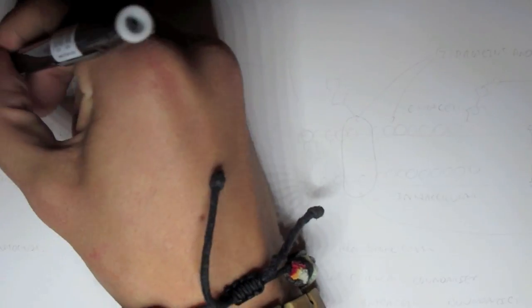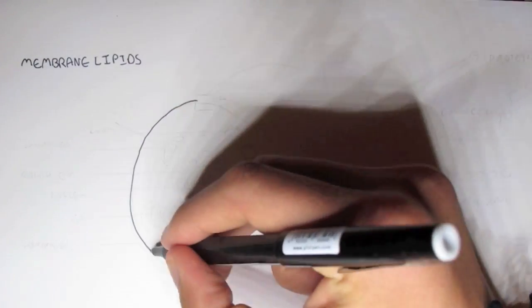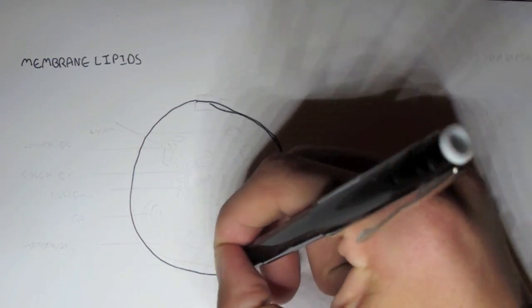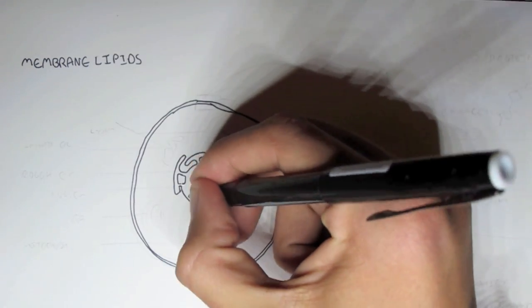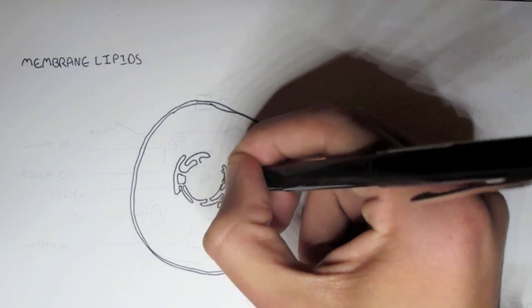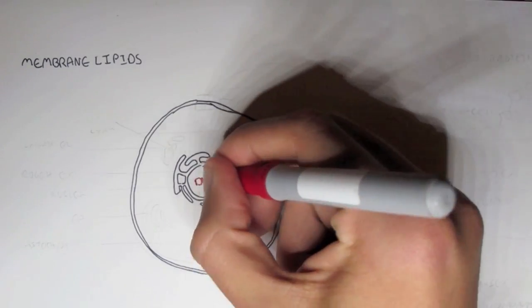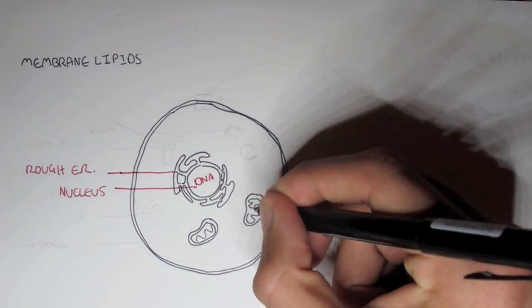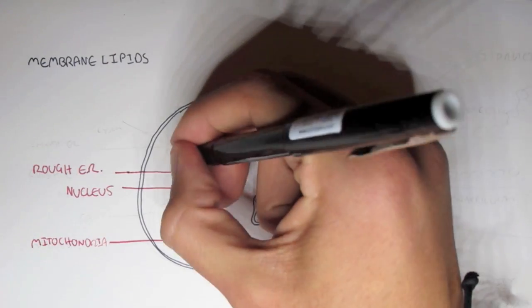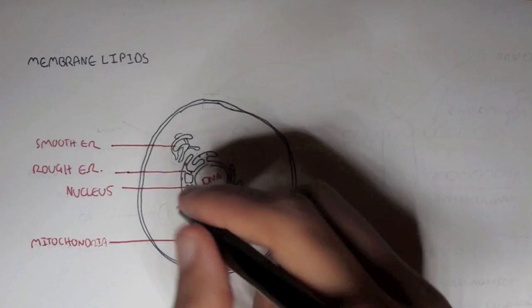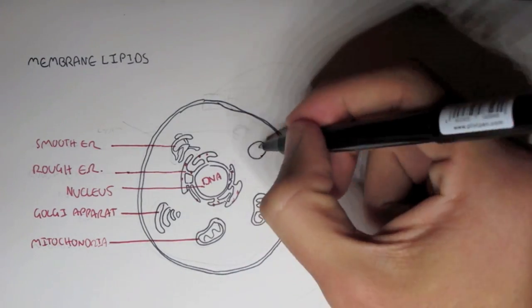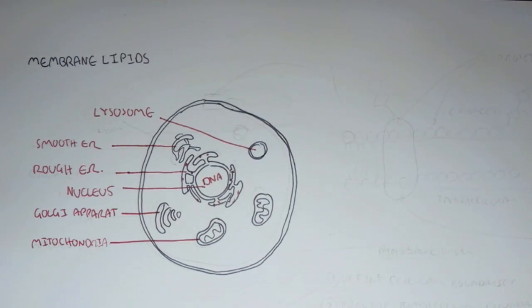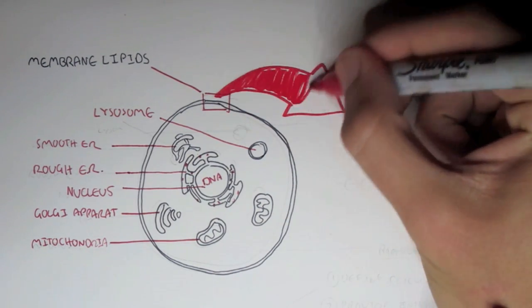And so this video is on membrane lipids, the cell membrane itself. So let's just look over the cell and the organelles and structures within it. Here we have the nucleus where the DNA is stored, the rough endoplasmic reticulum around the nucleus, mitochondria, the smooth endoplasmic reticulum with the ribosomes, the Golgi apparatus, and lysosomes.